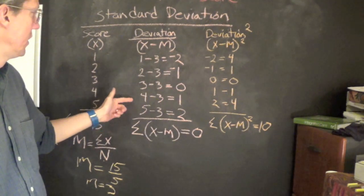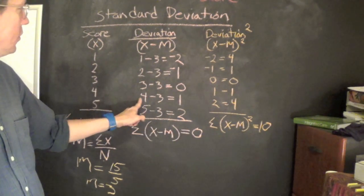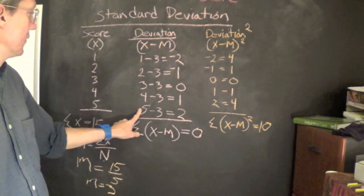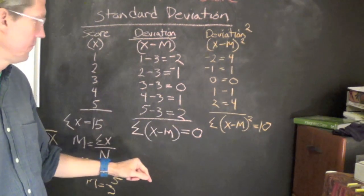Here we had three, so we have zero. This person scored four, four minus the mean, we're one above the mean. This person was two above the mean.